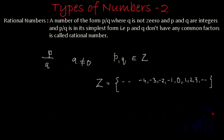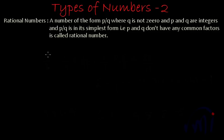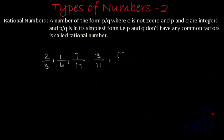So I think you understood what a rational number is. Now let's take a few examples. Numbers like 2 by 3, 1 by 4, 7 by 17, 3 by 11, or 13 by 19 — all these numbers are in the form of P by Q and there is no common factor between the numerators and denominators. So all these numbers are called rational numbers.